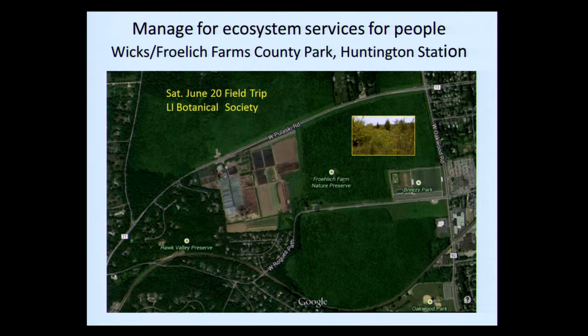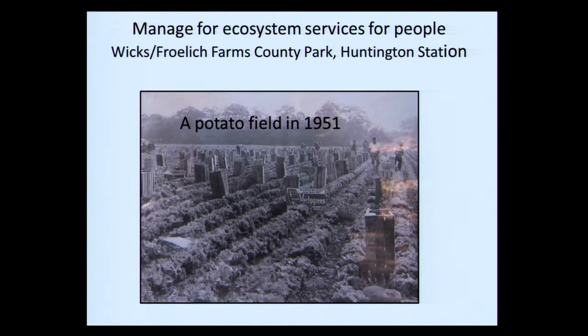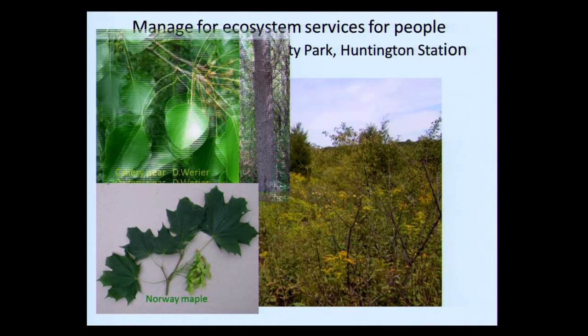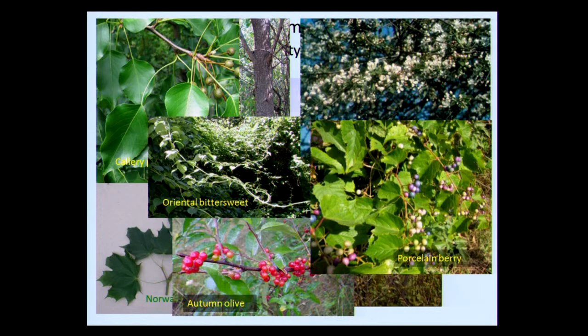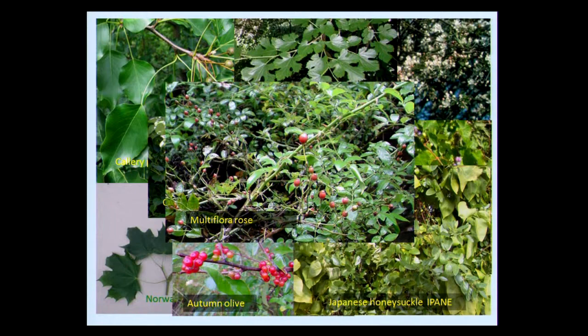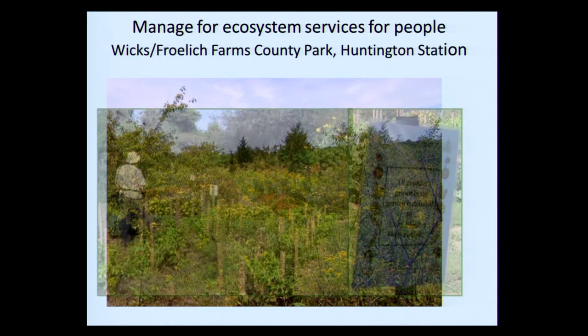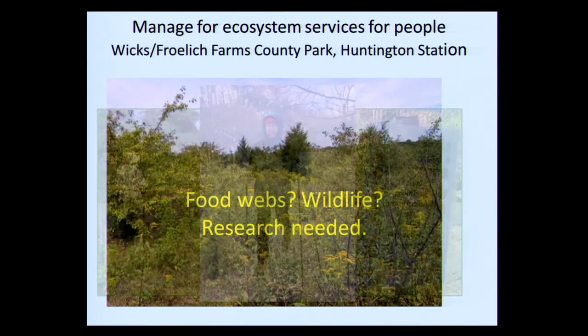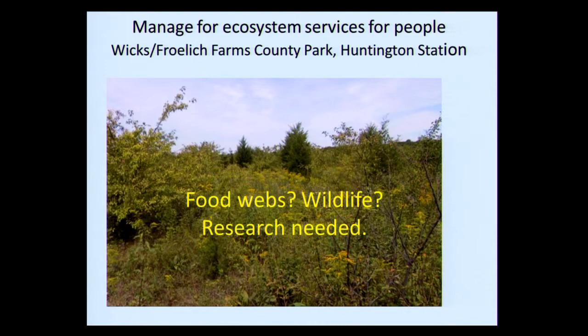A quick example near home: the Wicks Farm, Froelich Farms County Park. It was an old potato field in 1951. Now it's a mix of invasive and scattered native species — there are still native species, but you have to search to find them. This is a site where you may have to manage for ecosystem services: one service is organic gardeners growing produce there and giving it to food banks, and the skiing was pretty great there in February. But regarding food webs and wildlife, we know nothing about that side of Wicks Farm or other places like it — we need more research.